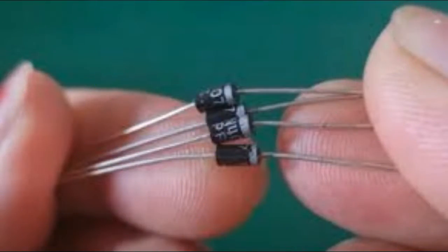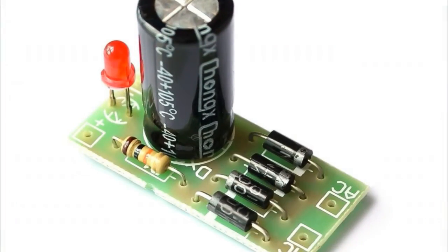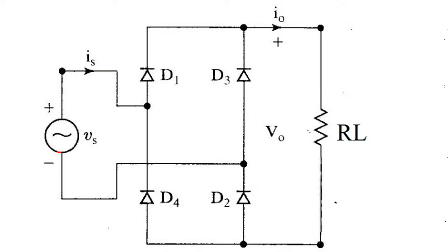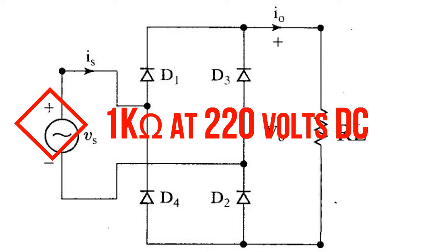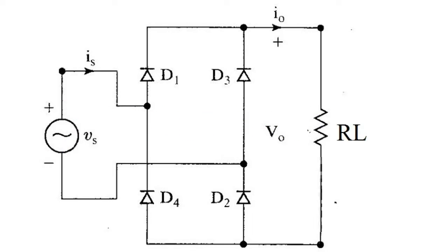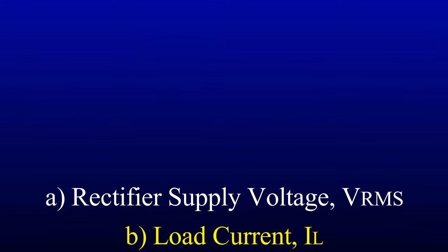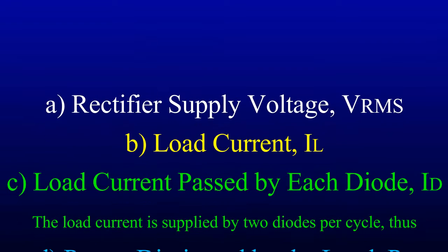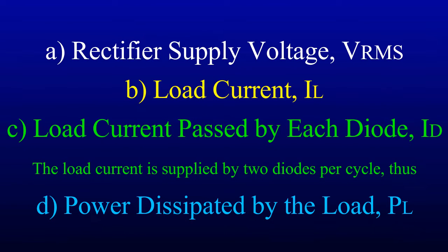Four diodes are used to construct a single-phase full-wave bridge rectifier circuit which is required to supply a purely resistive load of 1kΩ at 220 volts DC. Calculate the RMS value of the input voltage required, the total load current drawn from the supply, the load current passed by each diode, and the total power dissipated by the load. Assume ideal diode characteristics.